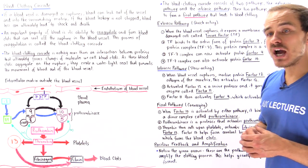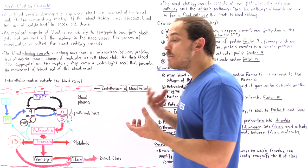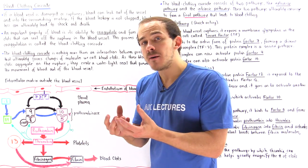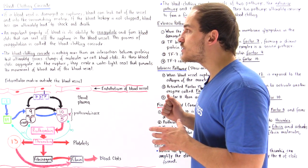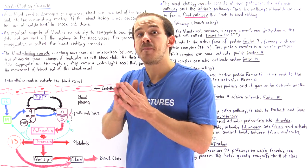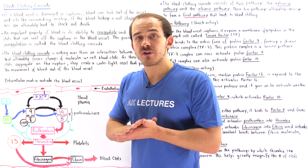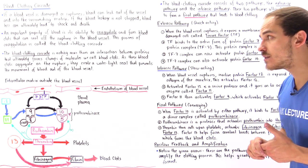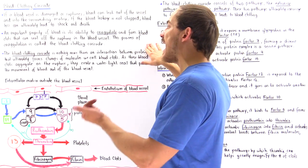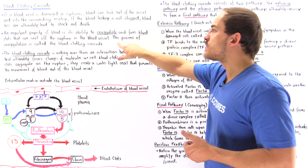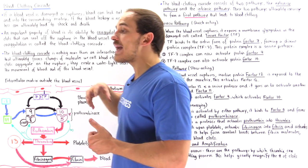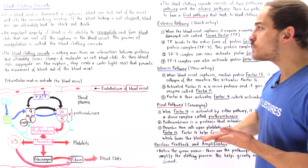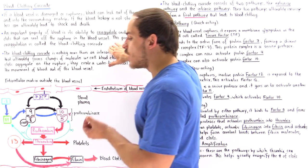An important property of our blood is its ability to coagulate — to form clumps we call blood clots. These blood clots can bind to ruptures, aggregate along them, and seal off that rupture in the blood vessel, preventing the leakage of blood. This process of coagulation, forming blood clots that seal off the rupture, is known as the blood clotting cascade.